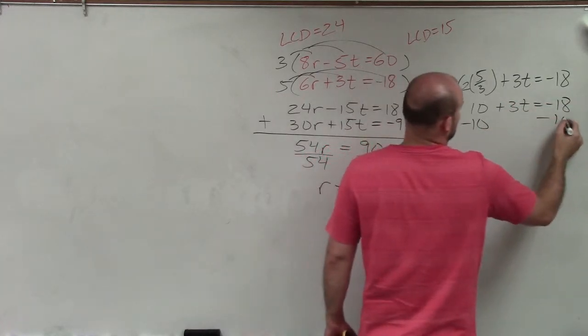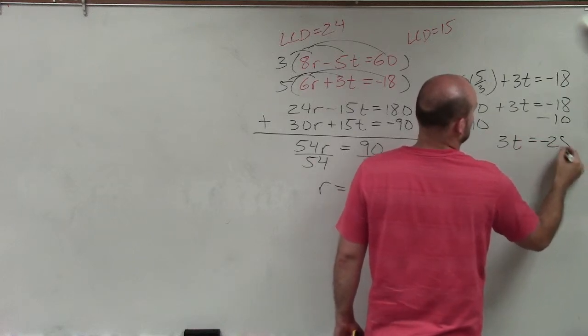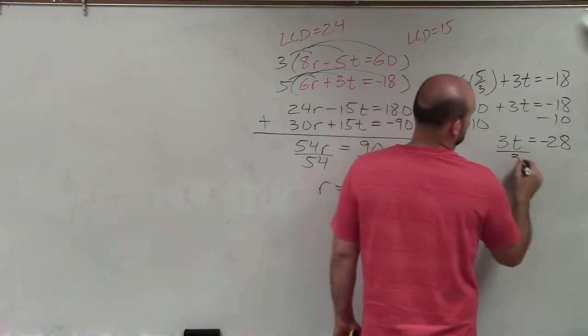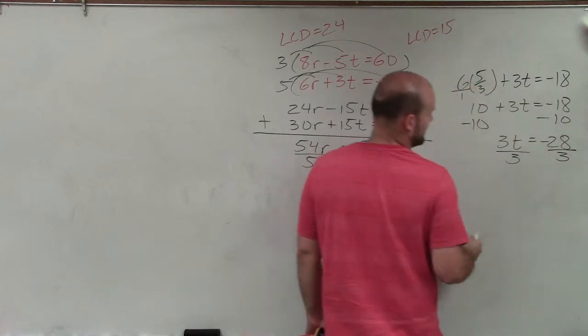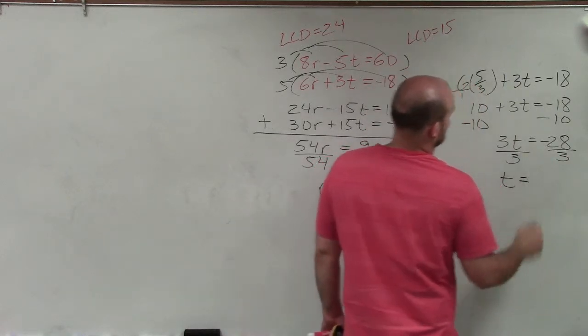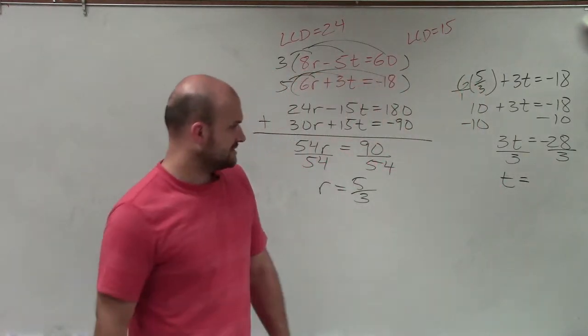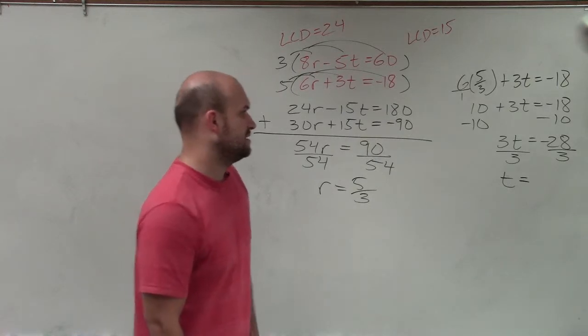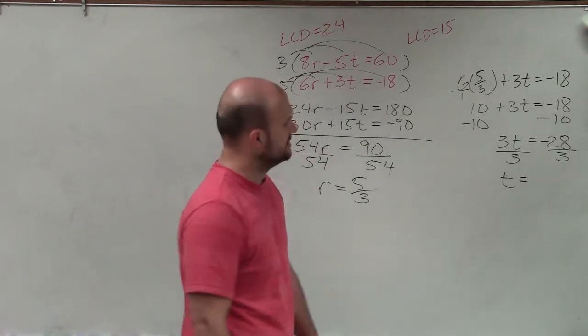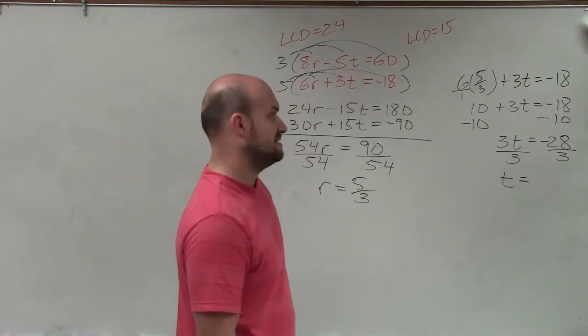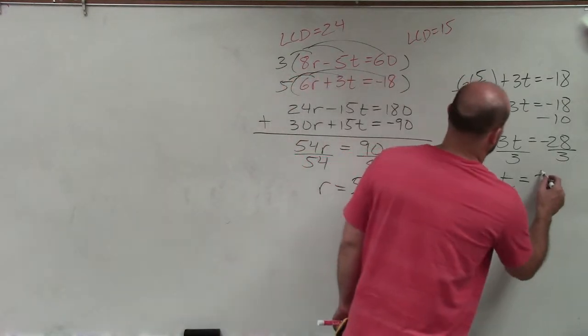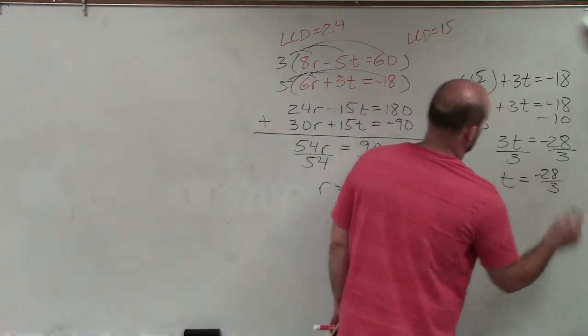Subtract 10, subtract 10, 3t equals a negative 28. Divide by 3. Divide by 3. 3 is going to equal 7, 21. 3 goes into there. 3 does not go into negative 28. So my final answer would just be a negative 28 over 3.